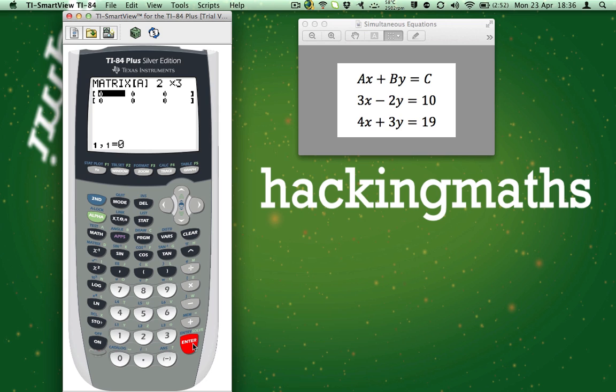Now we enter the coefficients of the letters into the matrix. The coefficients are just the numbers in front of the letters. So we type 3 as that is in front of the X and press Enter. We type minus 2 as that is in front of Y and press Enter. And then we type 10 and press Enter.